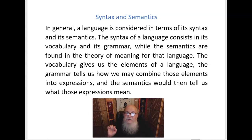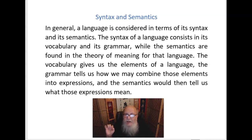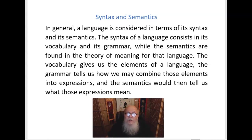In general, a language is considered in terms of its syntax and its semantics. The syntax of a language consists in its vocabulary and its grammar, while the semantics are found in the theory of meaning for that language. In the previous lecture, we discovered the semantics — the theory of meaning — which is summed up in the five truth tables for the five operators. That gives us what any expression means in terms of its truth value. But in our syntax, we'll have a vocabulary which gives us the elements of the language, and a grammar that tells us how we may combine those elements into expressions.